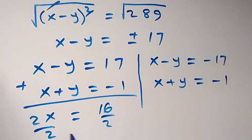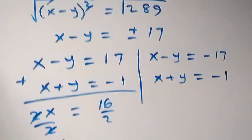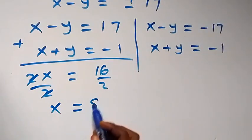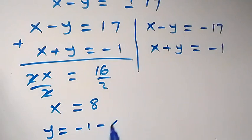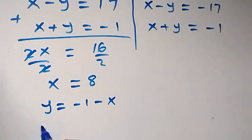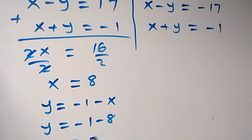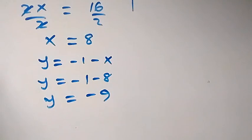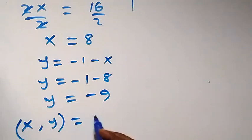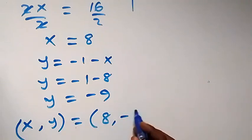For case one (x minus y = 17 and x plus y = -1): adding gives 2x = 16, so x equals 8. Substituting into equation three gives y equals minus 1 minus 8, so y equals minus 9. The first solution is (x, y) = (8, −9).